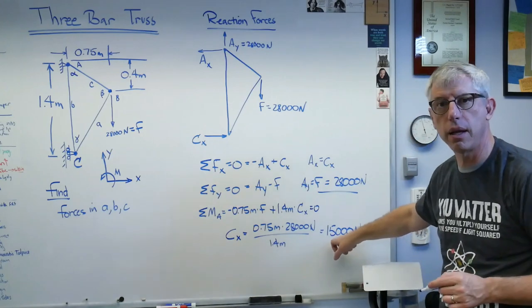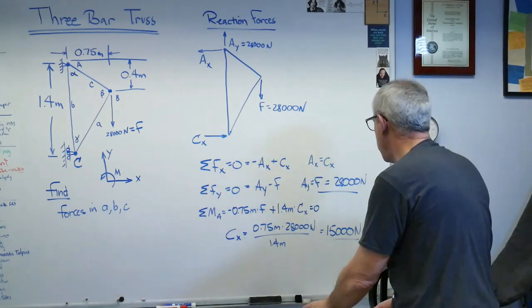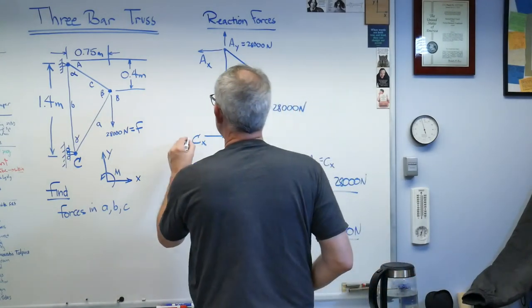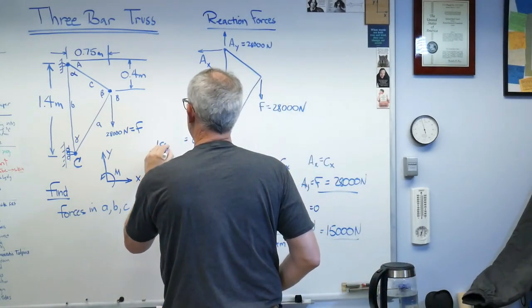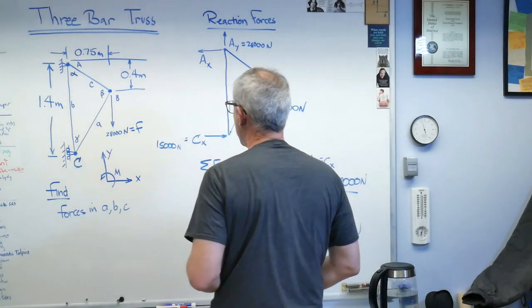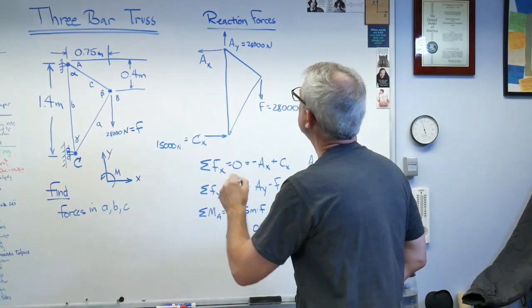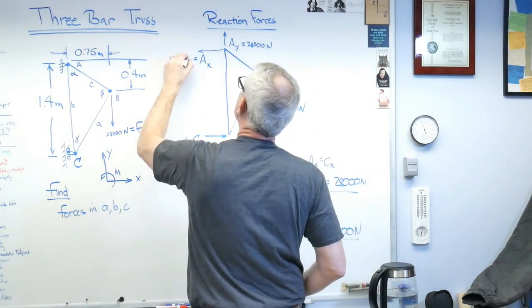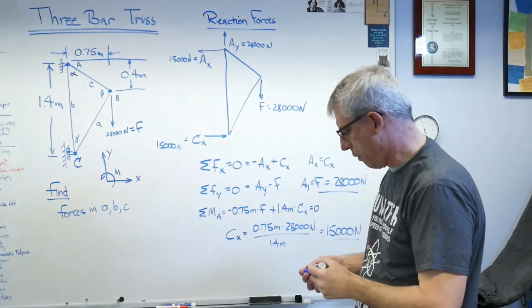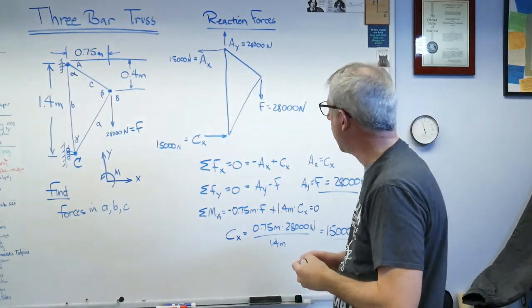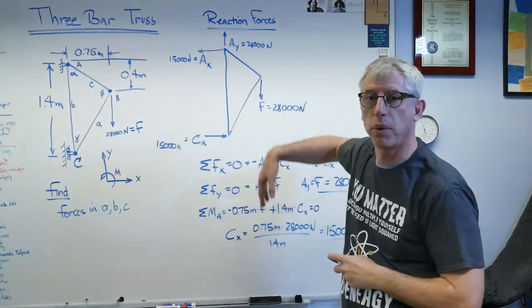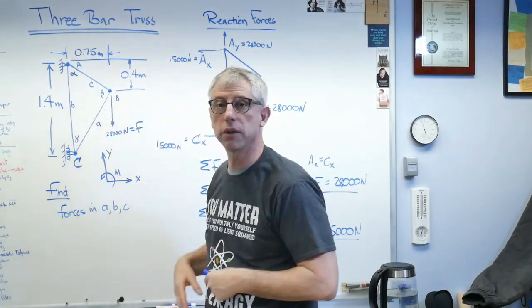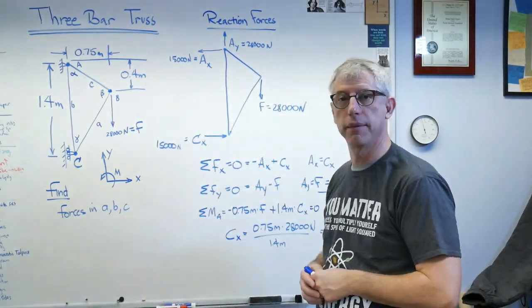So C_X is 15,000 newtons, and that means A_X is also 15,000 newtons. With the reaction forces solved, I'm going to erase this part of the board and we're going to start solving for little a, little b, and little c - the forces in the elements.